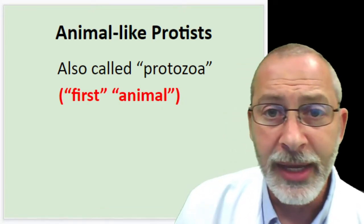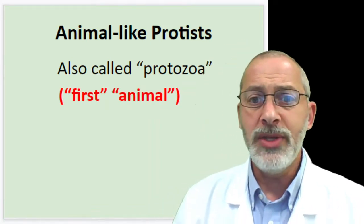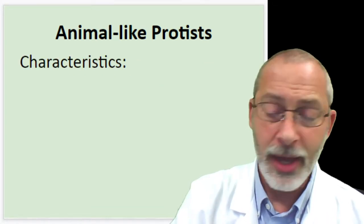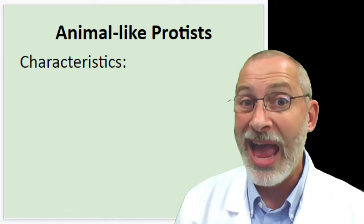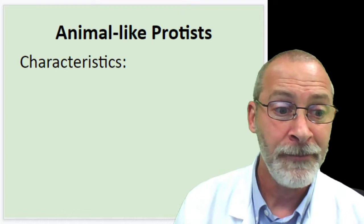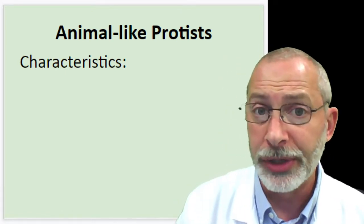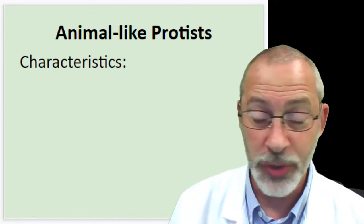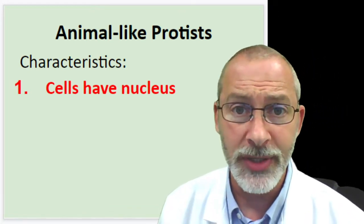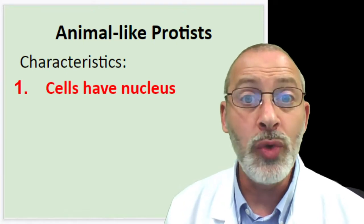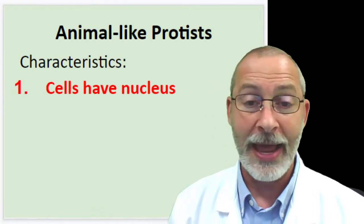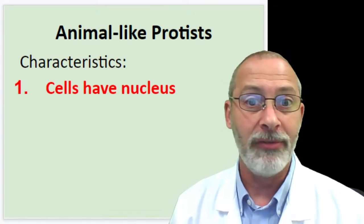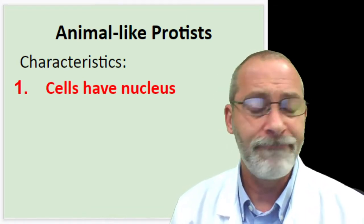These protozoa have certain characteristics which make them animal-like. Think about animals in general and what we learned earlier in the year about the differences between plants and animals. Number one: animal-like protists have cells with a nucleus. This certainly distinguishes them from the Monerans of last week that didn't have nuclei. Animal-like protists have a nucleus.